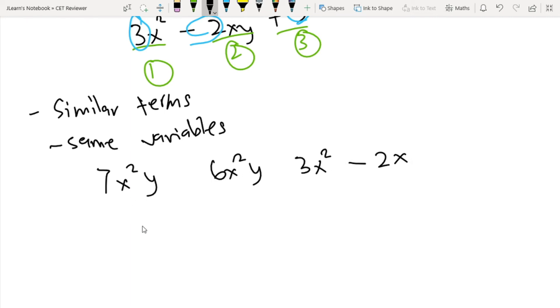So baka minsan may nalilito sa inyo. So kunyari x² over 5 and kunyari 10 over x². Pwede nyo sabihin na ah, same sila or similar sila kasi parehas x². Pero actually hindi sila similar terms.